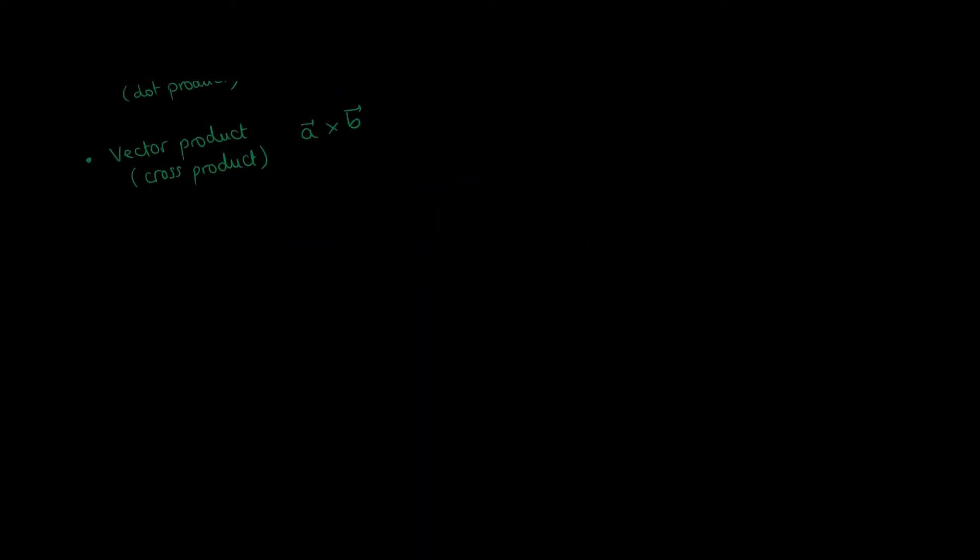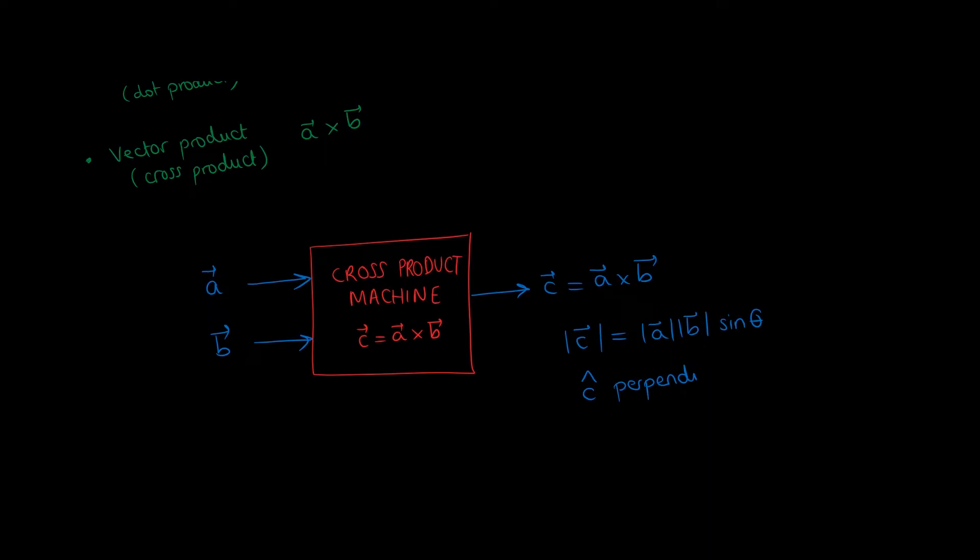Now, what about the cross product? The cross product is very different to the dot product because it's like a machine which has two vectors as its input and produces a vector as its output. This new vector has a magnitude equal to the magnitude of a times the magnitude of b times the sine of the angle between a and b. And it has a direction, c hat, which is perpendicular to both a and b. Also, the direction of c is determined by the right-hand rule.